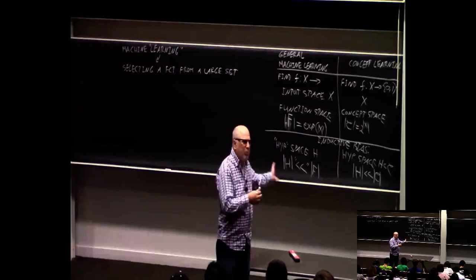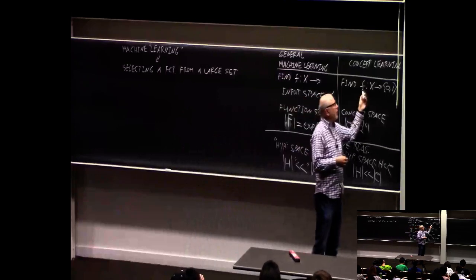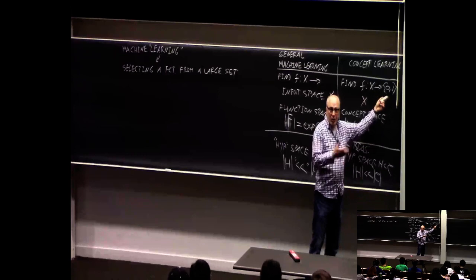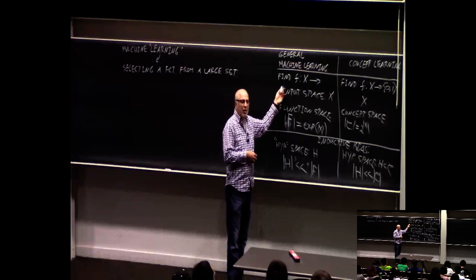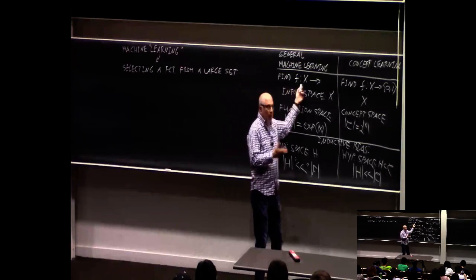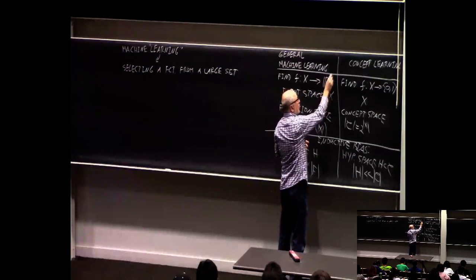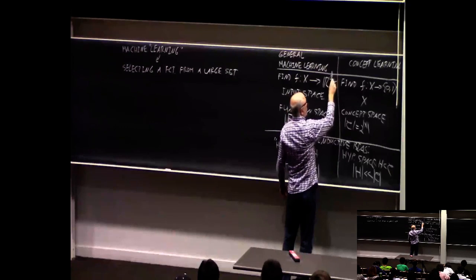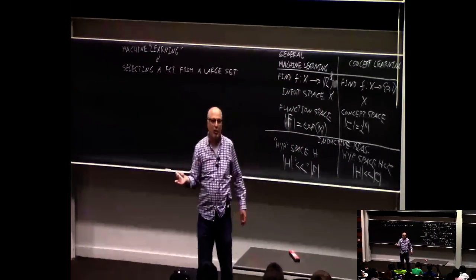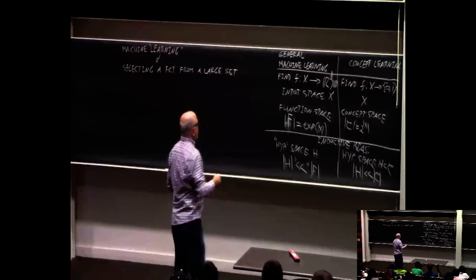In concept learning, the goal is to find a function from some input space into two categories, zero and one. In general machine learning, we phrase it as learning a function from some input space into something else — it could be the real numbers, a set of real numbers, a point in high-dimensional space, or a set of classes. If it's a number, it's regression; if it's categories, it's classification. The important thing is that we're trying to find a function.